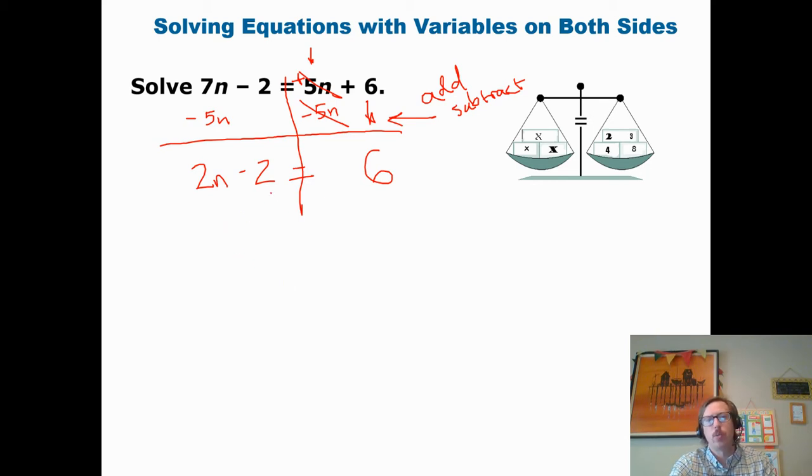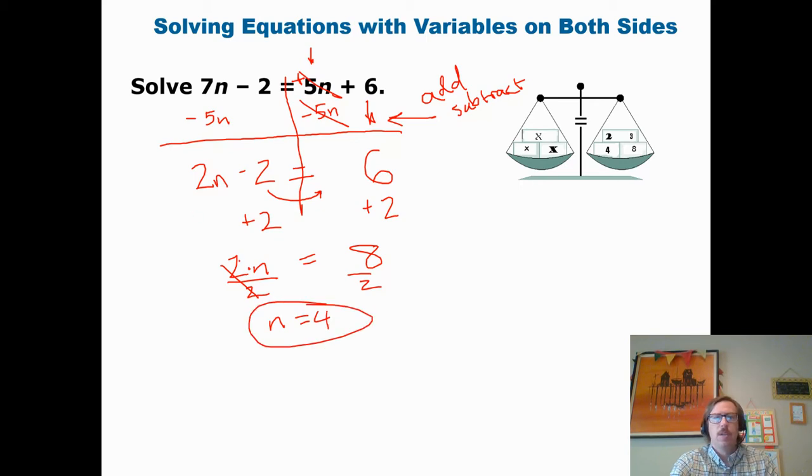From there, it's a two-step equation. We're going to collect our constant to the other side. And how we're going to do that is by putting its inverse. If it's 2n minus 2, we're going to add 2. 8 equals 2n. From here, we see that it's two groups of n, or two times n. To undo multiplication, we divide. And we're left with n equals 4.